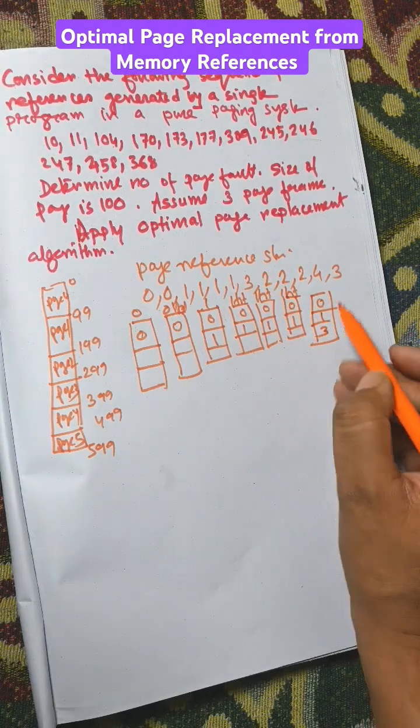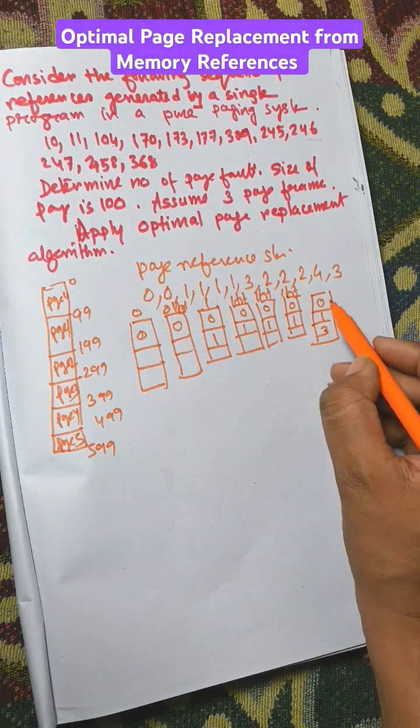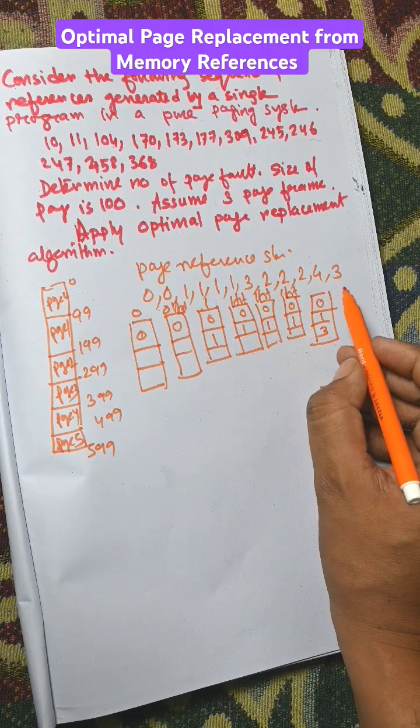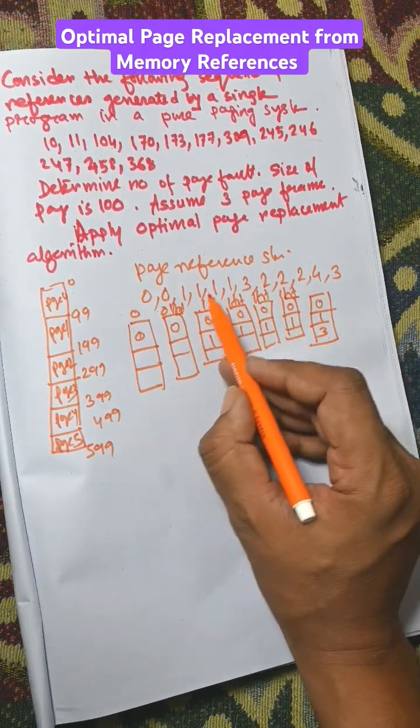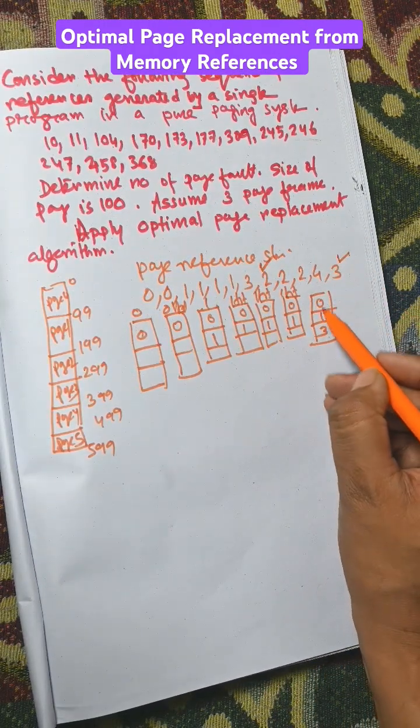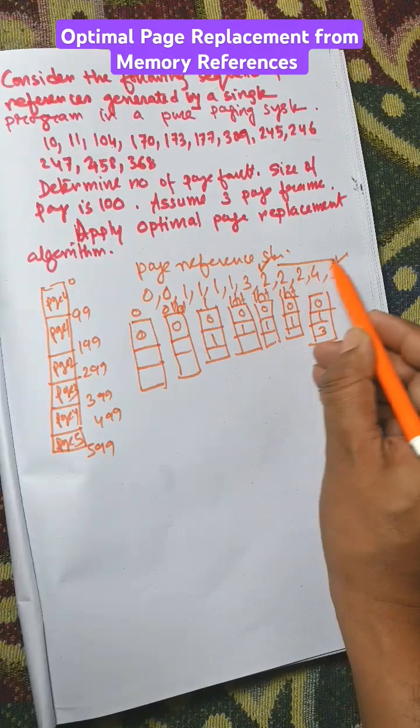Now we need to replace. Among 0, 1, 3, which will not be used in the future? Here 2 will be placed. 3 is found among future references, but 0 and 1 are not found. So we need to check first in first out.